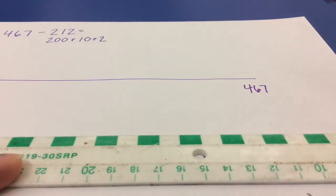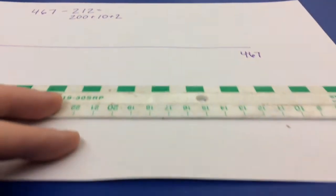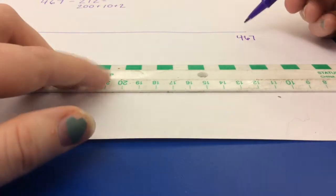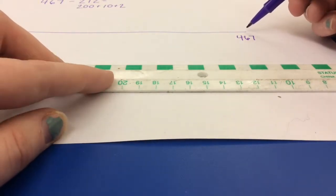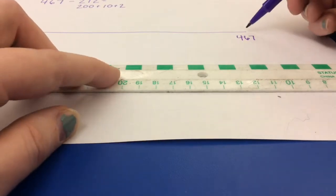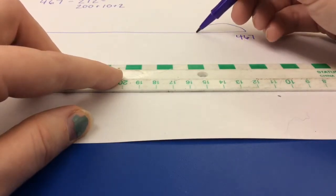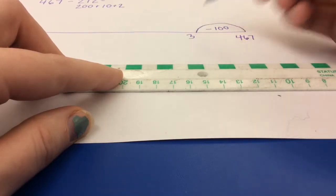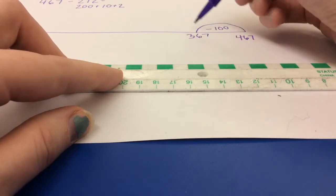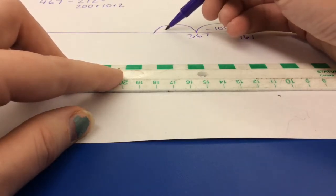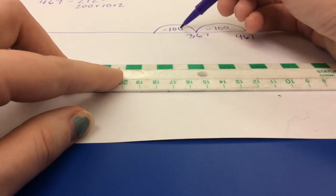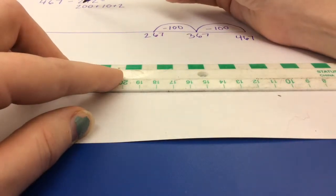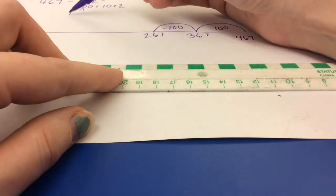Back to our number line, we look at 467. We're going to be taking out and subtracting, starting with the largest number in our second number, which is 200. So first I'm going to take away 100, which is 367. And then I'm going to take away another 100, which is 267, because inside 200, there are two 100s.